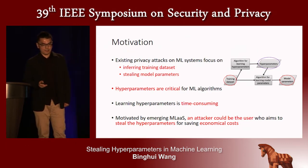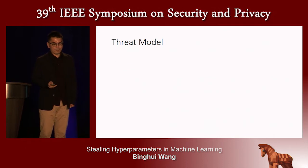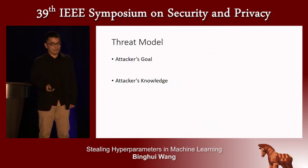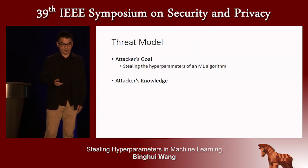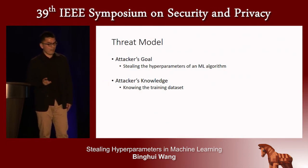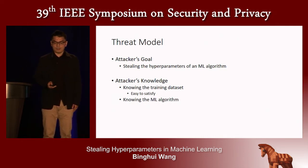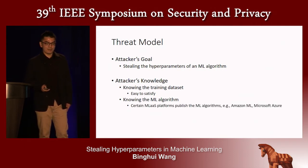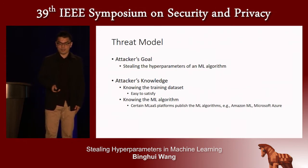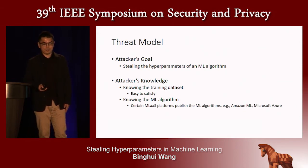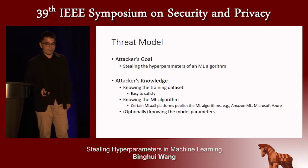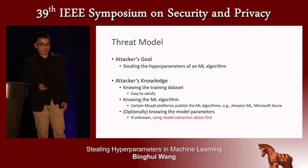Motivated by machine learning as a service, an attacker could be the user who aims to steal hyperparameters to save economical costs. The threat model has two aspects. First, the attacker's goal is to steal the hyperparameters. For attacker's knowledge: first, we assume the attacker knows the training dataset, which is easy since the user is always the attacker. Second, the attacker knows the machine learning algorithm—certain platforms publish their algorithms, for instance Amazon uses logistic regression and Microsoft Azure can use logistic regression or support vector machine. Third, the attacker optionally knows the model parameters; if unknown, we can first use a model extraction attack to steal them.